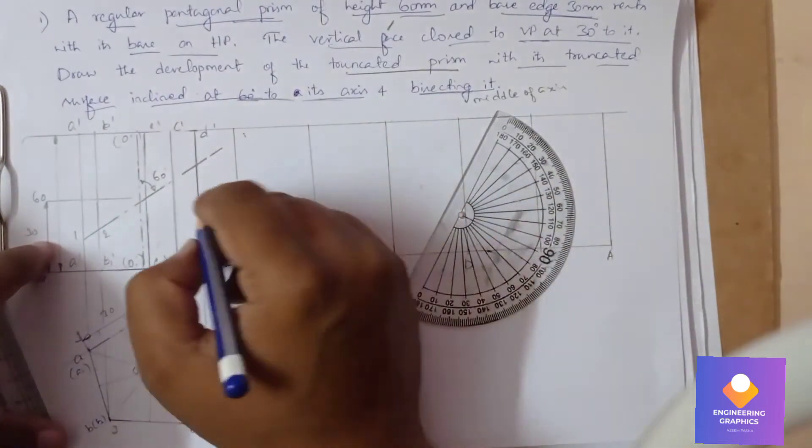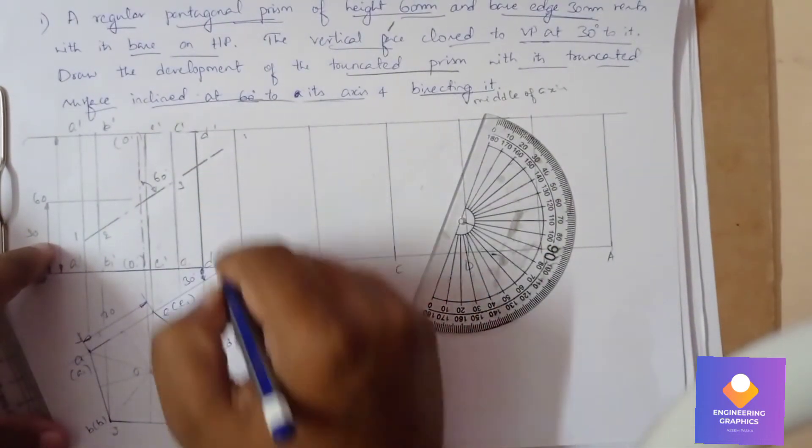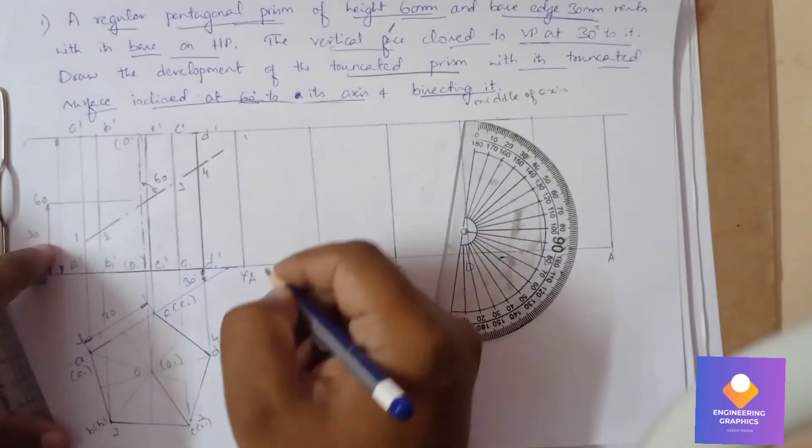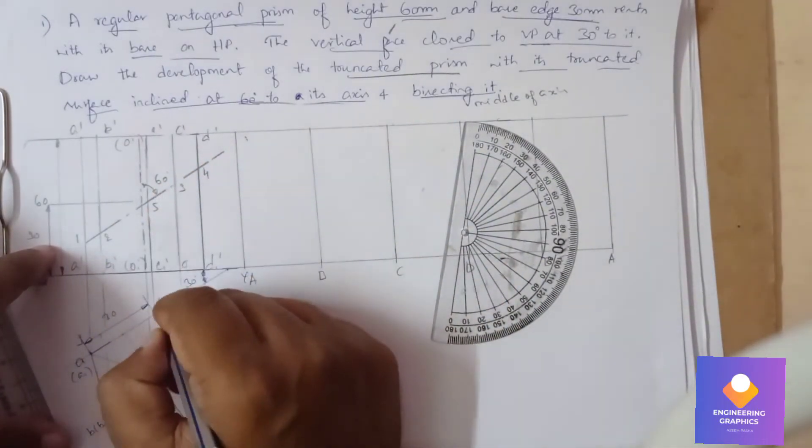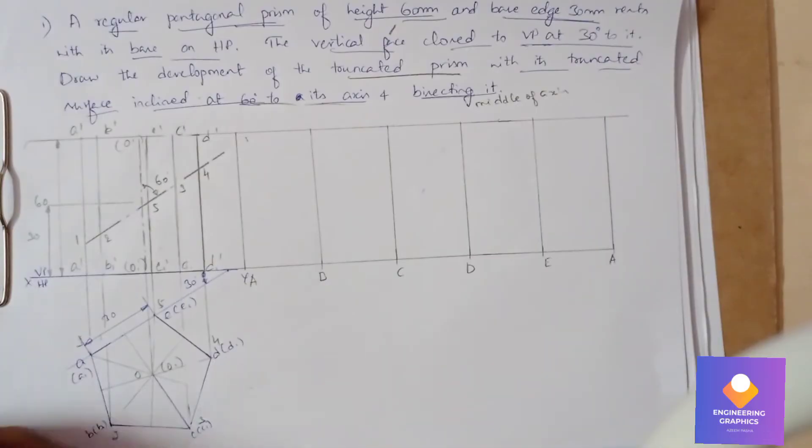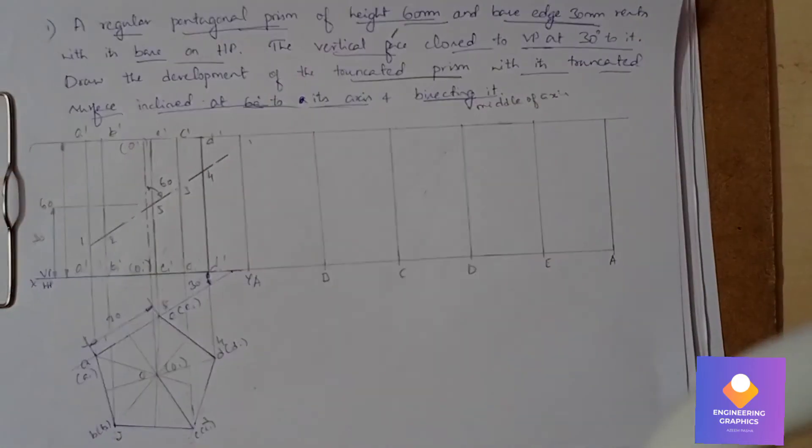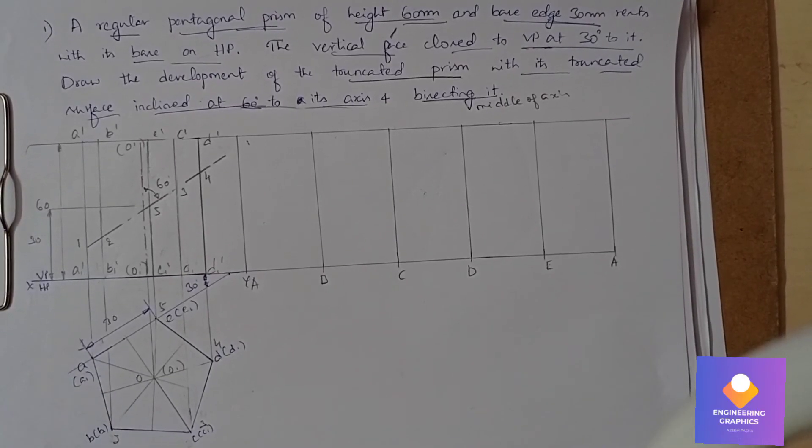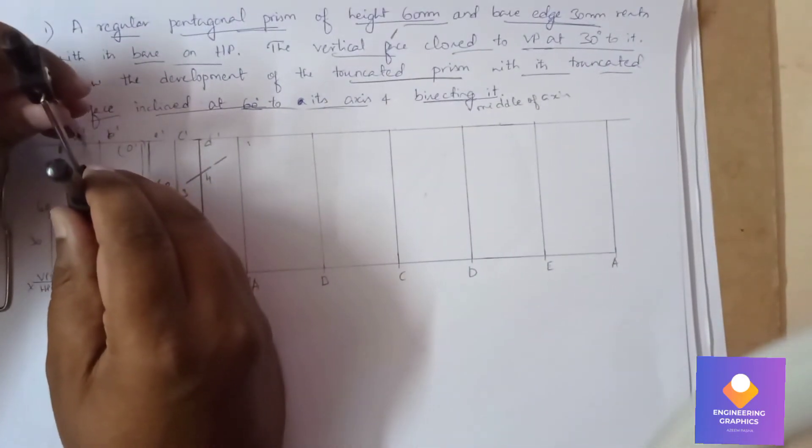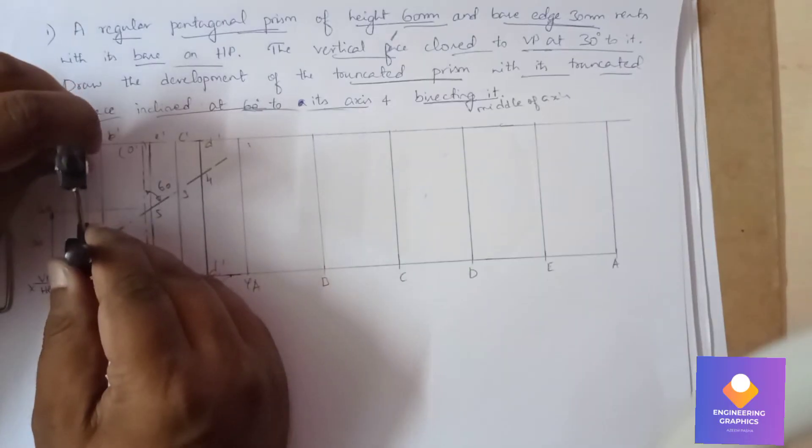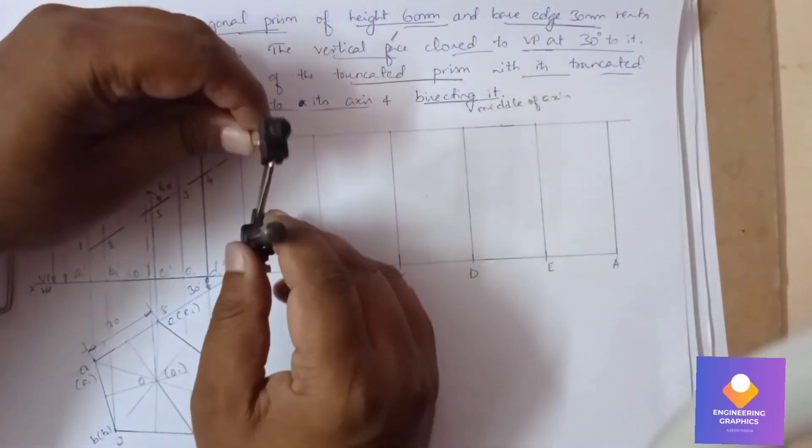With respect to these points, we need to draw the development of the truncated prism here. You can just measure the length from the top surface. 1-1 we can cut on A, then 1-2 from B.